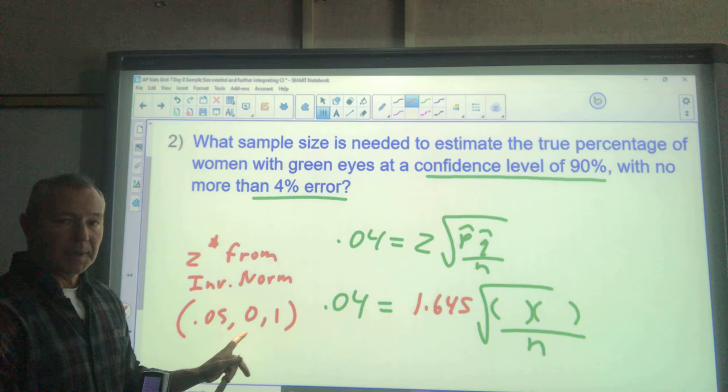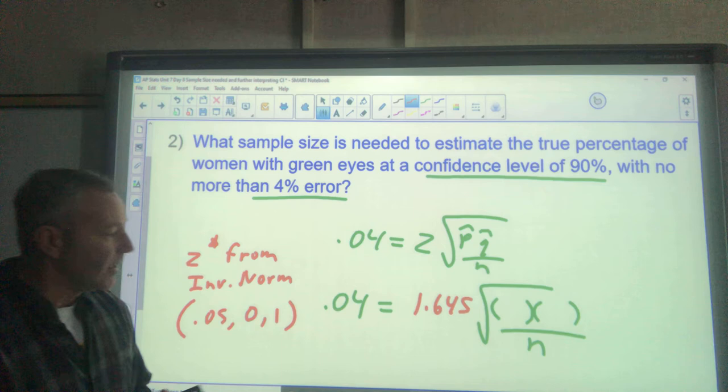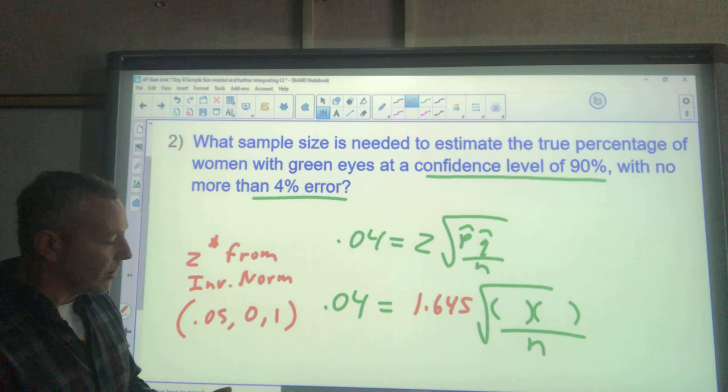So 5%, the area—plug in inverse norm, my mean is 0 always, and my standard deviation 1 for a z-score, I got my 1.645 there. And then the last thing that I do is I don't have p or q.